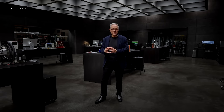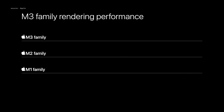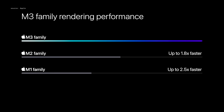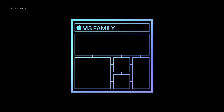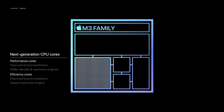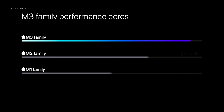The combination of hardware-accelerated ray tracing and the new graphics architecture allows pro apps to deliver up to 2.5 times faster rendering performance than the M1 family of chips. Now let's look at the M3 family's next-generation CPU cores. The performance cores are up to 30% faster than the M1 family,